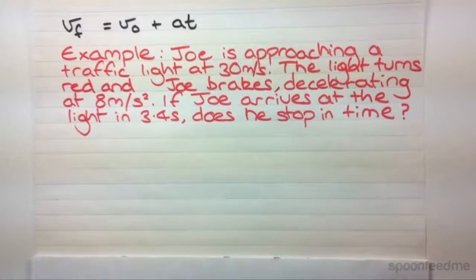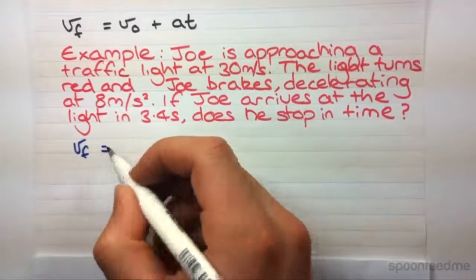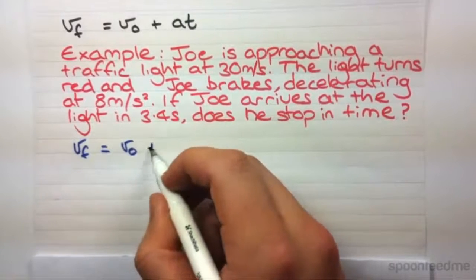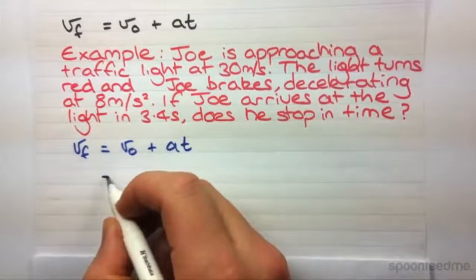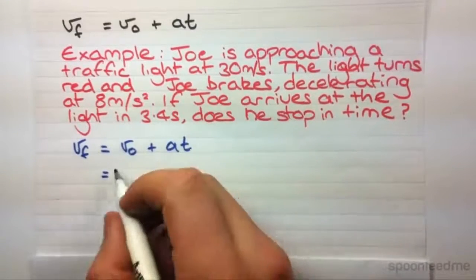This one is slightly more complicated and we'll see why. First things first, write down the equation. Then we can start subbing in some values. So, V0, 30 metres per second.